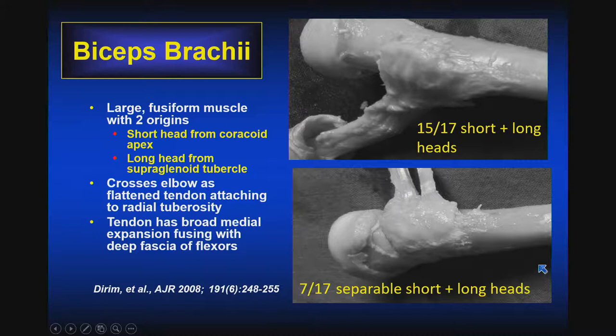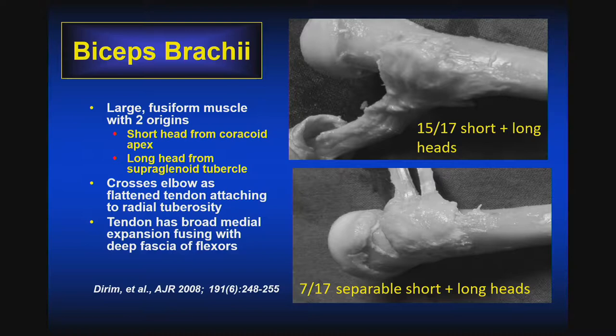In some cases we actually see the two contributions of the short and long heads of the biceps. Generally we think about evaluating the biceps around the elbow as a single tendon, but we have to understand that in some cases the short and long head can be seen as two components — sometimes completely separate, or as a dumbbell shape with a small attachment at the junction of the two. This crosses the elbow as a flattened tendon, attaching at the radial tuberosity. We'll also discuss this broad medial expansion — the bicipital aponeurosis, or lacertus fibrosus — that extends from the biceps tendon and fuses with the superficial margin of the flexor group.